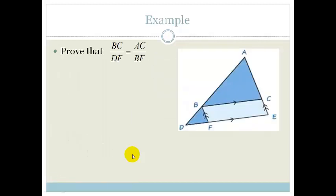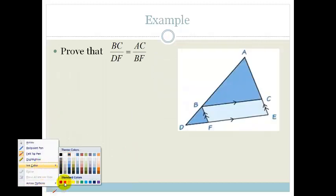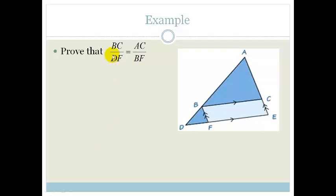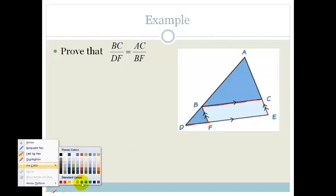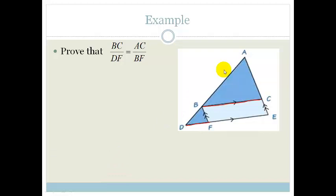So now let's use that in an example. It says, prove that BC over DF is equal to AC over BF.